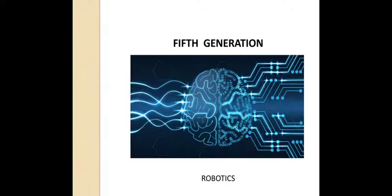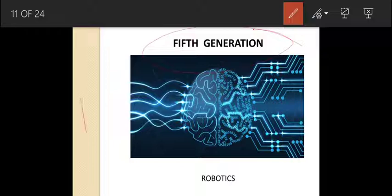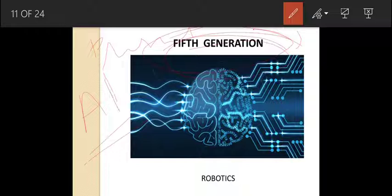Fifth generation computers use AI — Artificial Intelligence — and the timeline is present and beyond, meaning we will be using fifth generation in the future. Scientists are currently working on AI. In fifth generation, computers may have the ability of human intelligence and reasoning — they can decide and take decisions on their own. An example is robotics. Now we are done with generations of computers.